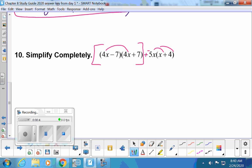So let me go ahead and do my FOIL. That matchup is a 16x squared. That matchup is a positive 28x. Then we're going to have a negative 28x. Then we're going to have a negative 49. Now when I distribute that negative 5x, it's a negative 5x squared and a negative 20x.